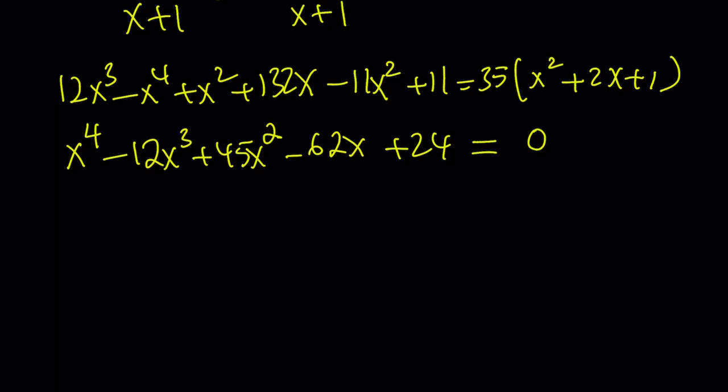So we're going to be using the rational root theorem. Possible roots are divisors of 24. And after trial and error, you're going to get that one of the roots is a 2 and the other one is a 3. So here's what we get from here.